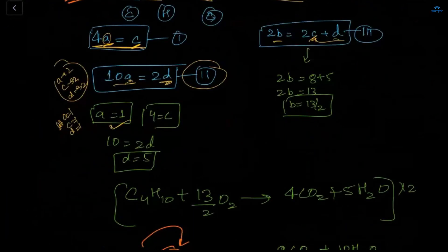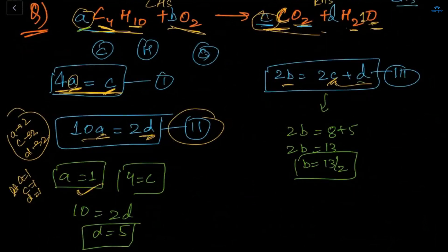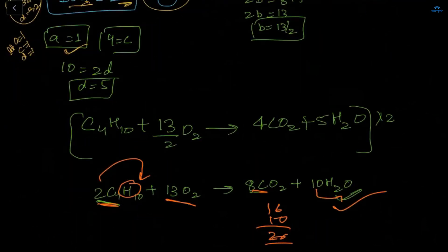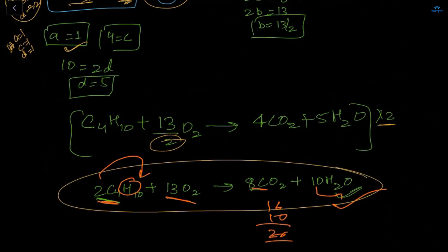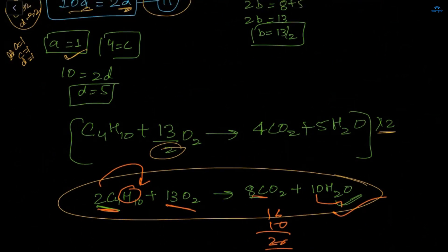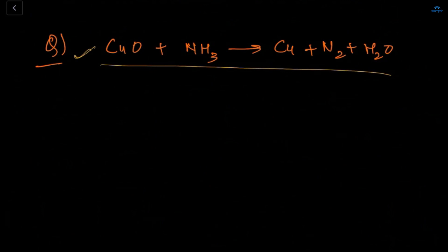Till this point you've understood. You just put the values of a, b, c, d into the chemical equation, check if there's a denominator, remove it by multiplying through, and get the final balanced chemical equation. Now try solving: CuO + NH3 → Cu + N2 + H2O.